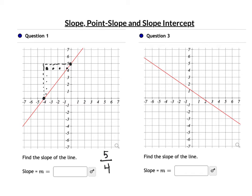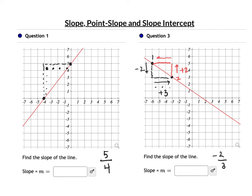Question 3: pick a point clearly on the line at a grid line. Make a triangle and count the slope. Going down 2 — that's negative 2 — and right 3 — that's positive 3. Rise over run is negative 2 over positive 3. Note: starting from the other point and going up 2 (positive) then left 3 (negative 3) still gives 2 over negative 3, which is the same as negative 2/3.